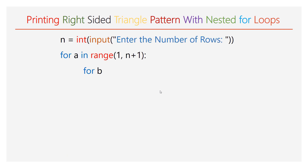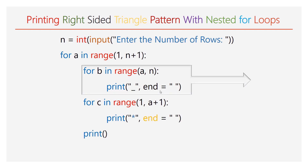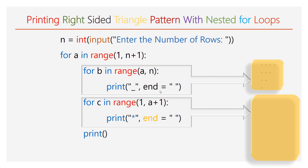Consider 3 for loops: an outer for loop with a range 1 to n+1 and 2 inner for loops. The first inner for loop has a range a to n. The print function with empty space and the end attribute is used. This inner loop is made as a function of the outer for loop — based on the value of the outer for loop, the first inner loop will be iterated and is responsible for producing empty characters in the output. The second inner for loop has the range 1 to a+1. The print function with star and end attribute is used. This second inner for loop is responsible for generating characters in the output. An empty print function starts printing in a new line after completing the inner for loops.